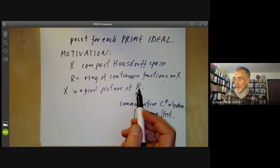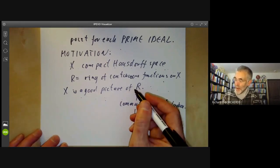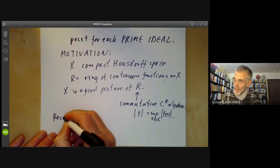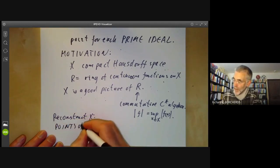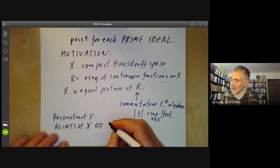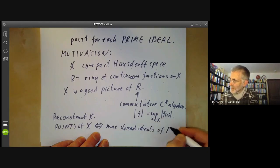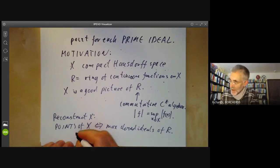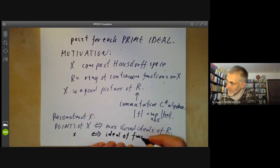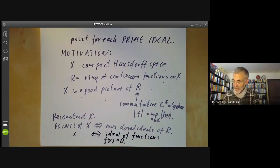We can go from X to R by taking the ring of continuous functions, and we can also go back from R to X. Given R, we can reconstruct X as follows: the points of X correspond to the maximal closed ideals of R. Each point X corresponds to the ideal of functions with F(X) = 0 — that is, the functions vanishing at X.